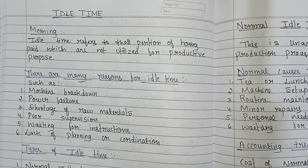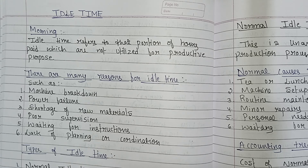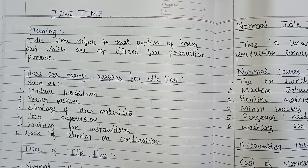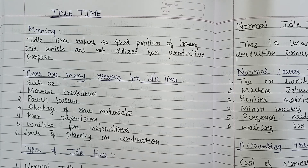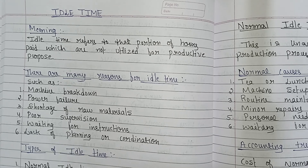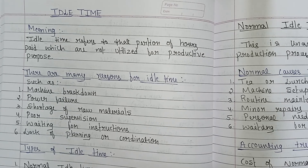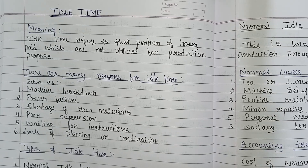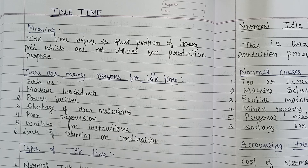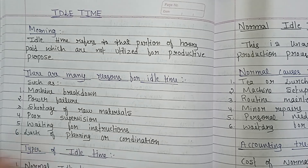So idle time means the time for which workers are paid but no production work is actually done. Next, let's see the types of idle time: normal idle time and abnormal idle time.